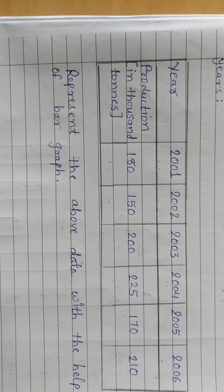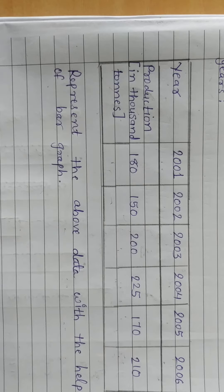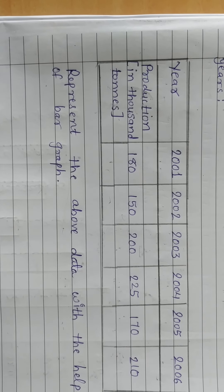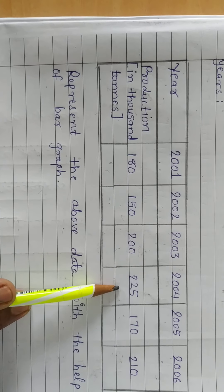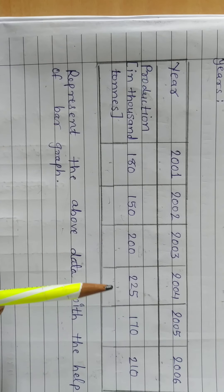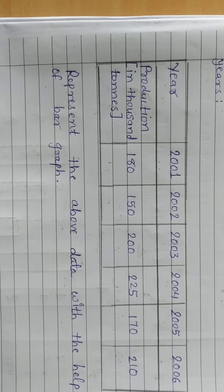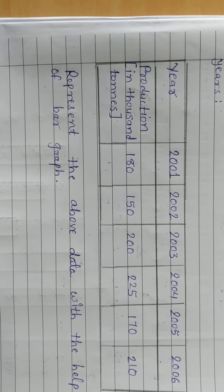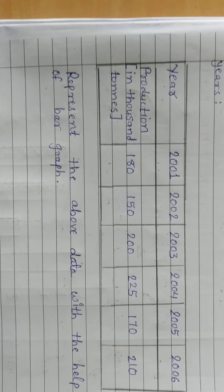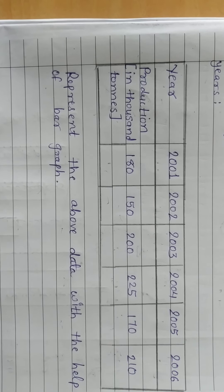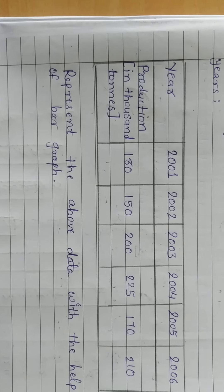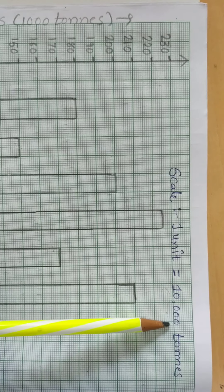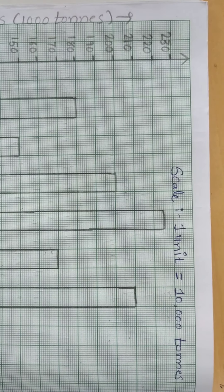We can draw this information on the basis of the bar graph. Here we can see that the biggest number is 225. So here we can see that the scale is 1 unit equals 10,000 tons. First of all, here we can see that the scale is equal to 10,000 tons.